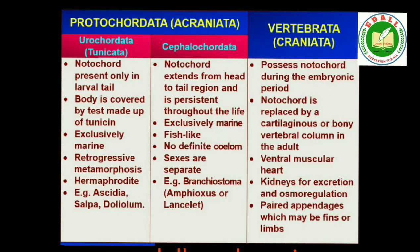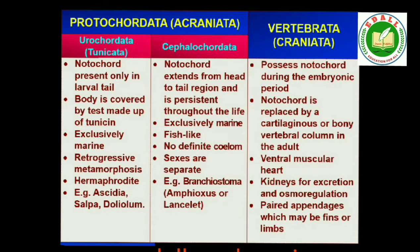The members of subphylum Vertebrata possess notochord during the embryonic period. The notochord is replaced by a cartilaginous or bony vertebral column in the adult. Thus all vertebrates are chordates but all chordates are not vertebrates. Besides the basic chordate characters, vertebrates have a ventral muscular heart with two, three or four chambers, kidneys for excretion and osmoregulation and paired appendages which may be fins or limbs.